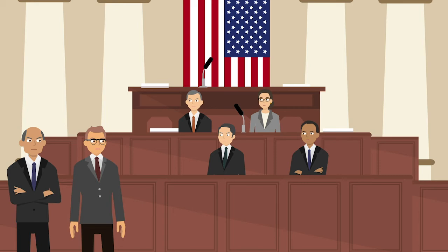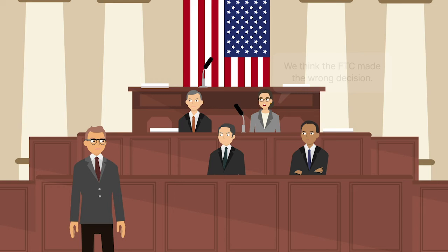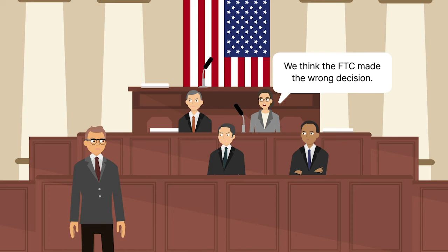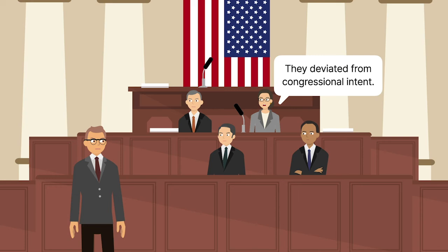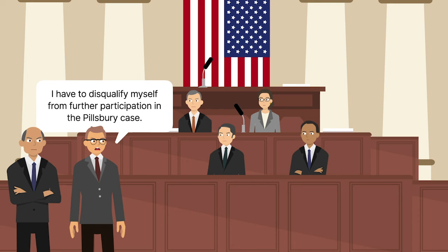The Pillsbury name was mentioned more than 100 times during the hearings. While questioning Chairman Howery, members of Congress forcefully voiced their own opinions that the FTC had reached the wrong decision and deviated from congressional intent in rejecting the per se doctrine. The questions were so probing as to how and why this decision was reached that Chairman Howery announced that he would have to disqualify himself from further participation in the pending Pillsbury case.